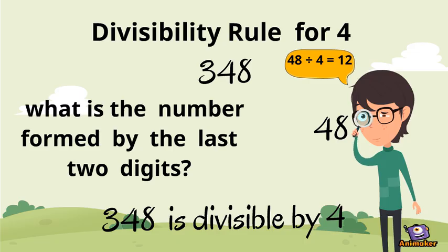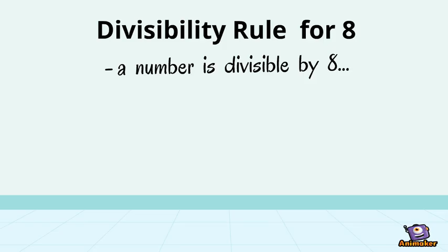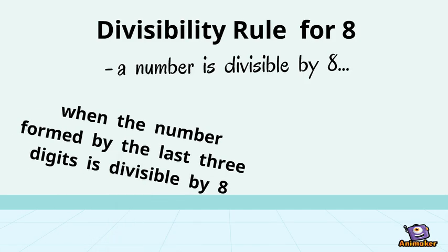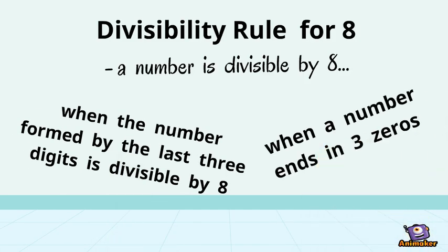Next, the divisibility rule for number 8. A number is divisible by 8 when the number formed by the last three digits is divisible by 8, or when a number ends in three zeros.